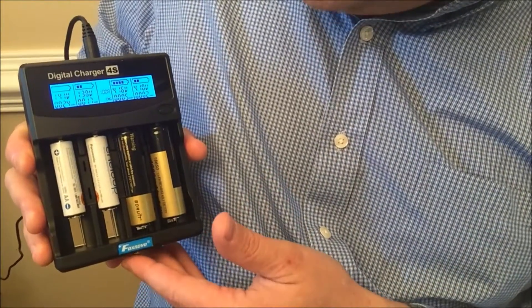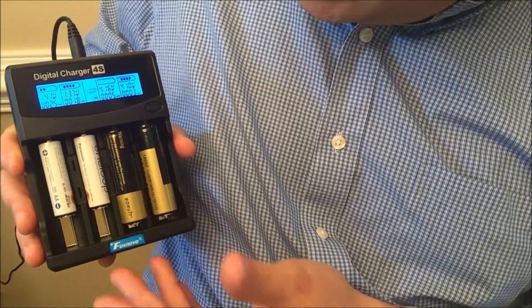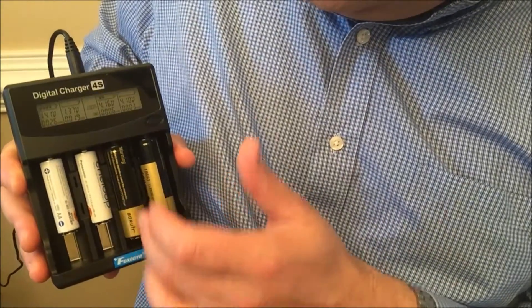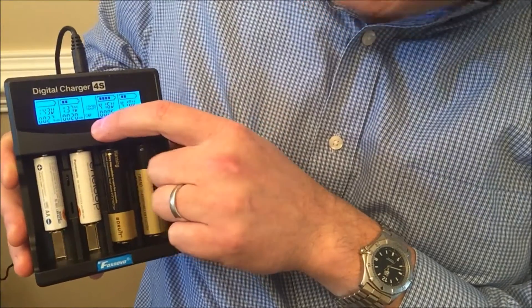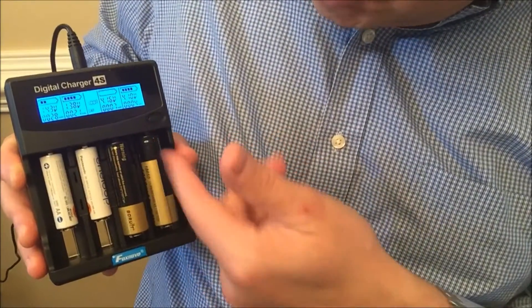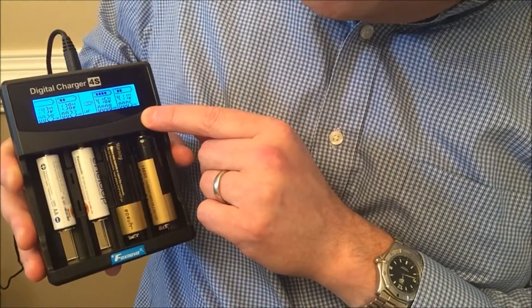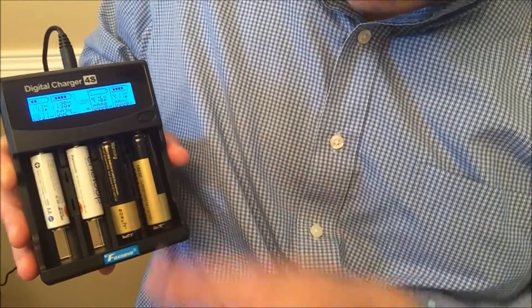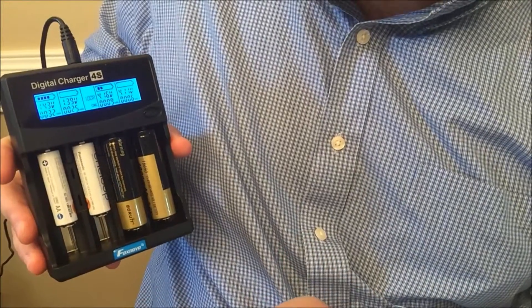One of the other things about this digital charger that's pretty cool is that it's got a capacity function. I haven't used this function, but once these fully charge, you can press and hold this down. See how it changes from charge to cap? It'll actually discharge the battery and store the capacity of that battery. I haven't really had a need to charge a battery and then discharge it to find the capacity, but you could do that if you want.